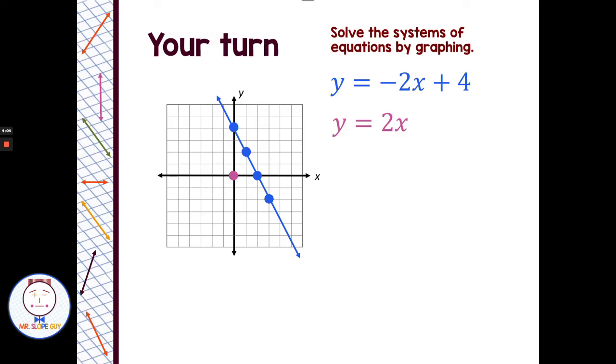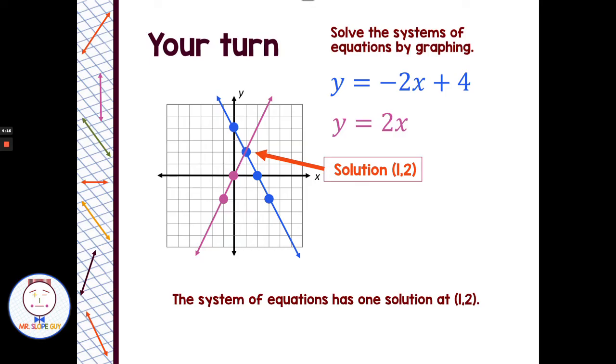Then the slope of 2 or 2 over 1 would be up 2, right 1, or down 2, left 1, and would make this line. Then where do the two lines cross? They cross at 1, 2. An x of 1 and a y value of 2 is my one solution.